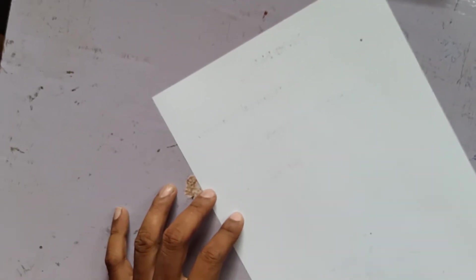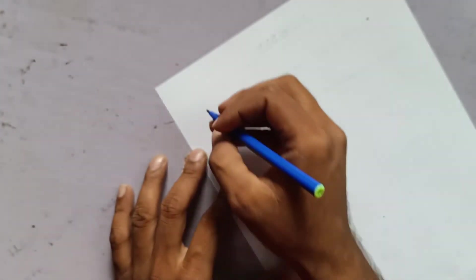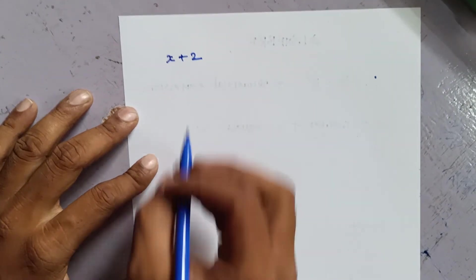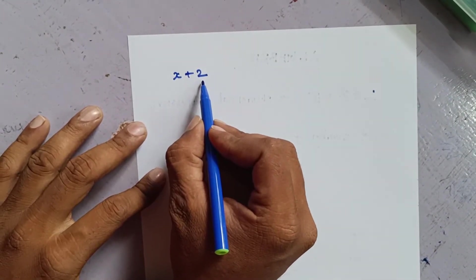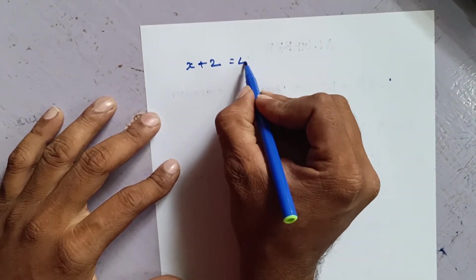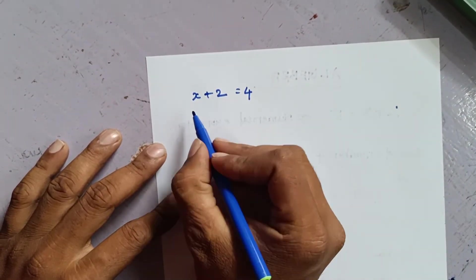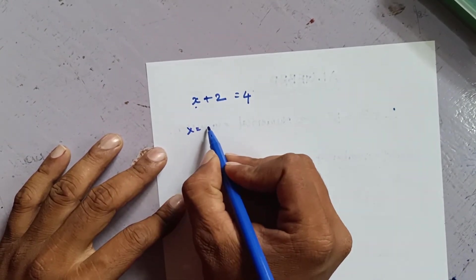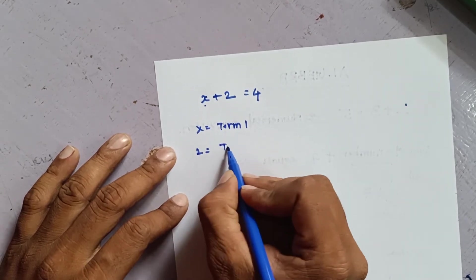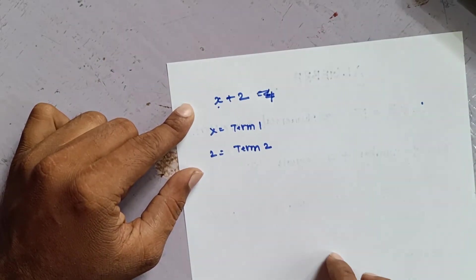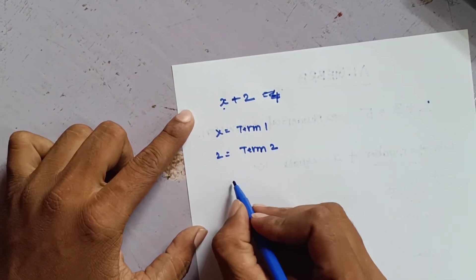In an algebraic equation, I have a variable and I have a constant. A constant is a number that does not change. For example, in the expression x plus 2, X is the first term and 2 is the second term — so there are two terms. In the expression 2x, there is only one term.